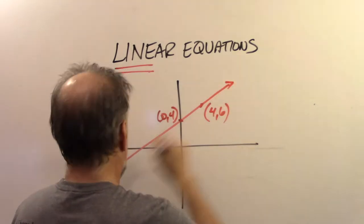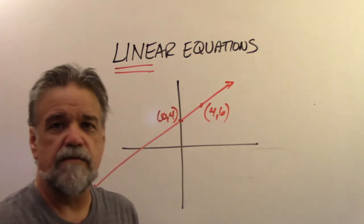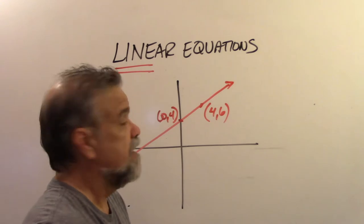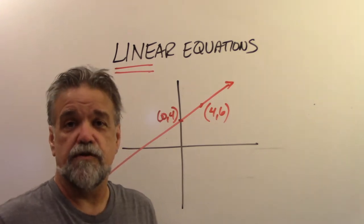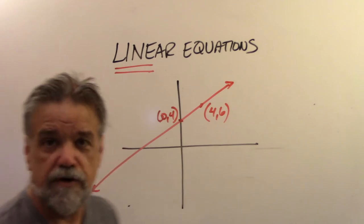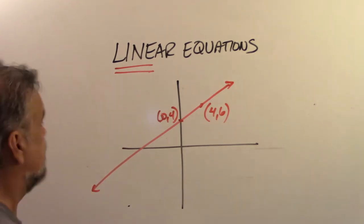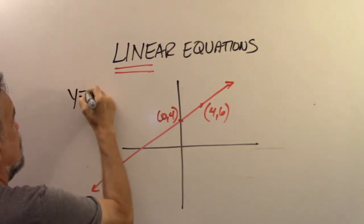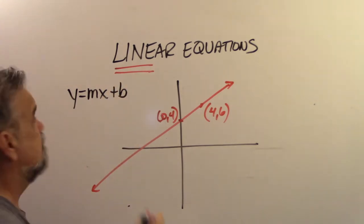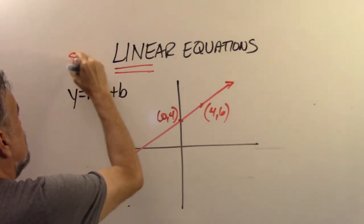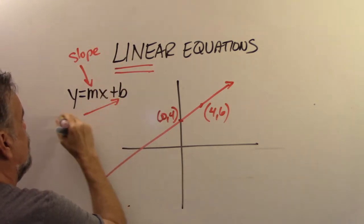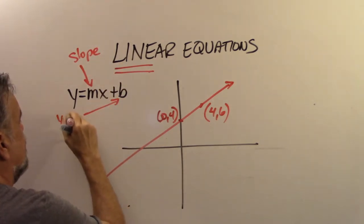How can I come up with an equation that describes this line? The most common way to describe a line is using the slope-intercept form of a linear equation, which is y equals mx plus b. m is your slope, and b is your y-intercept.